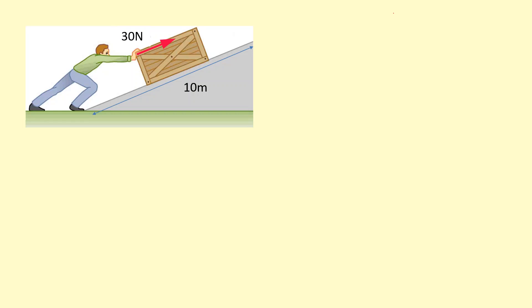This diagram shows a man pushing a box up a slope. He's applying a force of 30 newtons and moving a distance of 10 meters. Here's a graph of force and distance. As you can see, the force is constant across the whole distance, so to figure out the work done you just use the equation force times distance. So 30 newtons times 10 meters gives us 300 joules of work done.